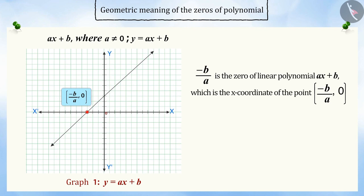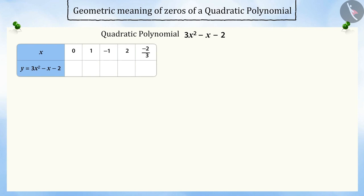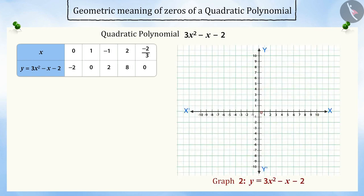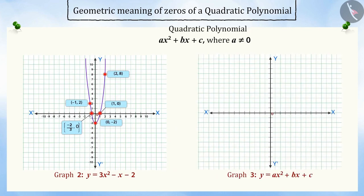Using this conclusion, we will try to understand the geometrical meaning of a quadratic polynomial. Let us take the quadratic polynomial 3x² − x − 2. If we substitute values of x into y = 3x² − x − 2 and plot those points on the graph, we will get a parabola. Therefore, we can conclude that the graph of a quadratic polynomial ax² + bx + c, where a ≠ 0, is a parabola.